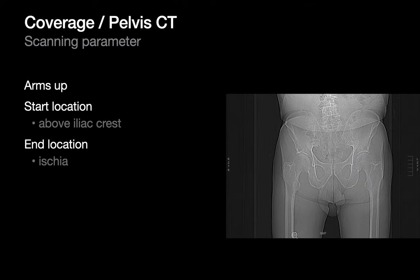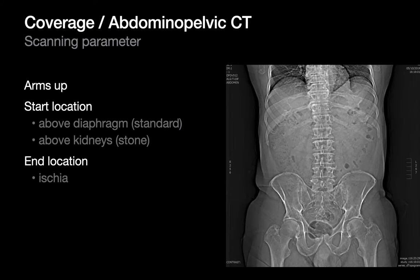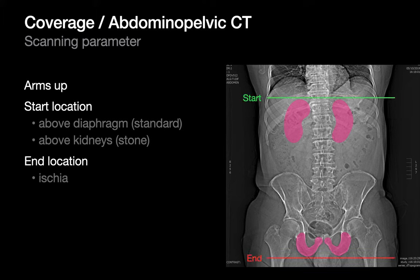For pelvis-only CTs, the arms are raised and the scan goes from just above the iliac crest to just below the ischia. For abdomen and pelvis CTs, the arms are raised; a standard study scans from above the domes of the diaphragm to the ischia, while a urinary tract calculus study scans from above the kidneys to the ischia.